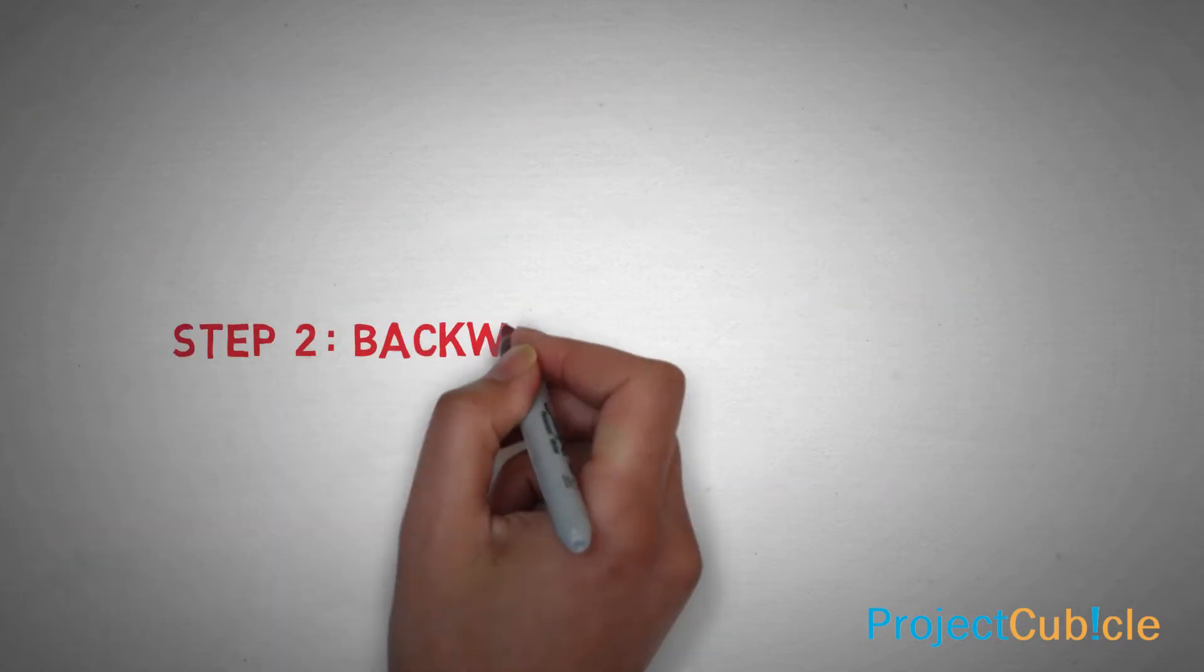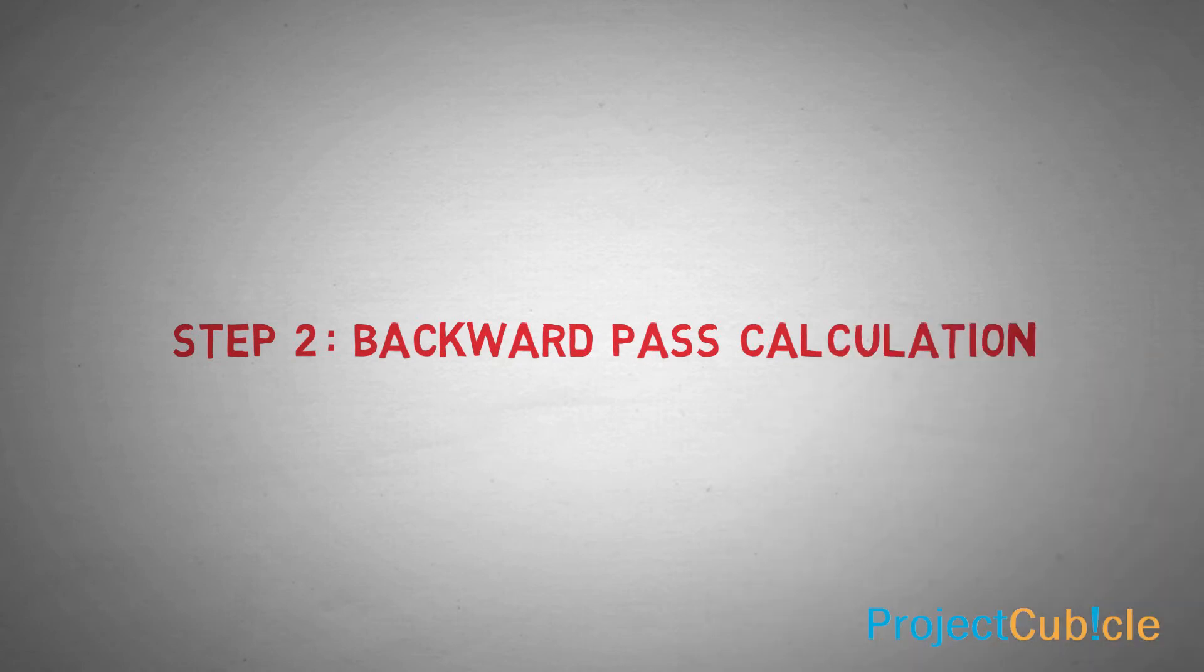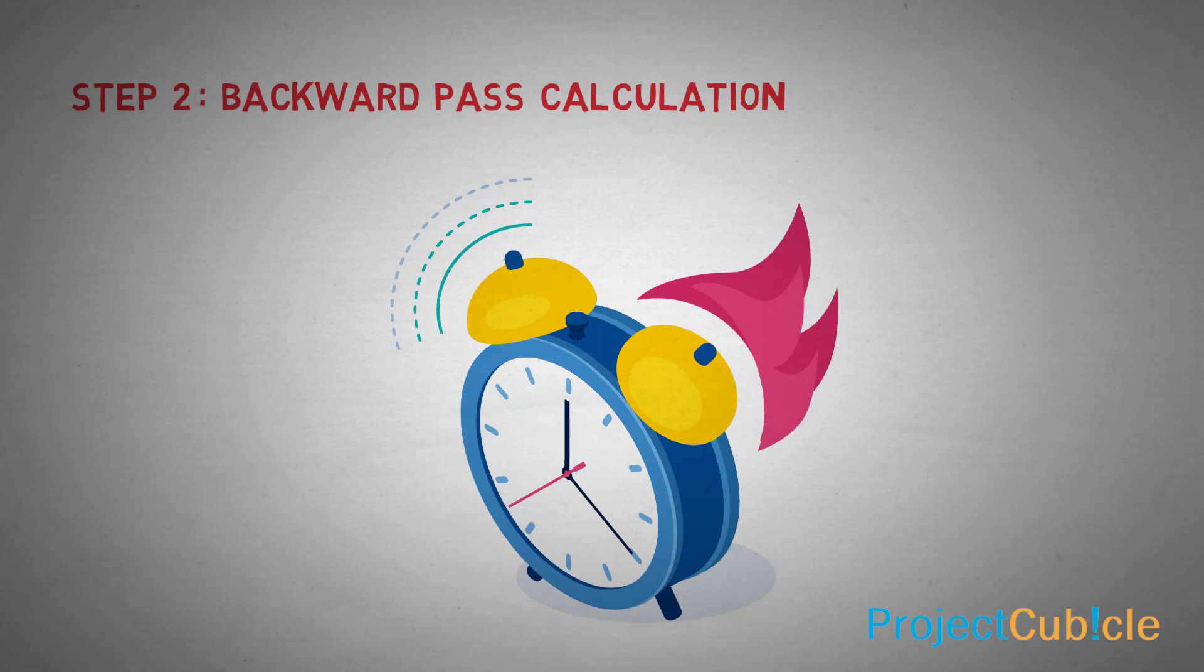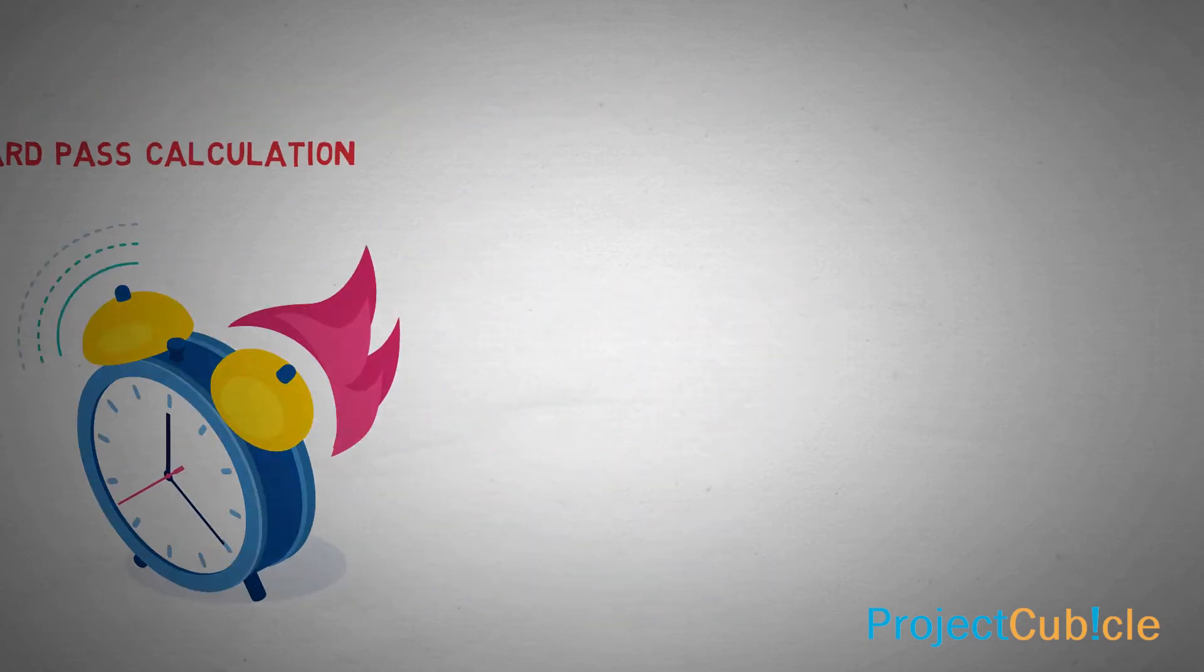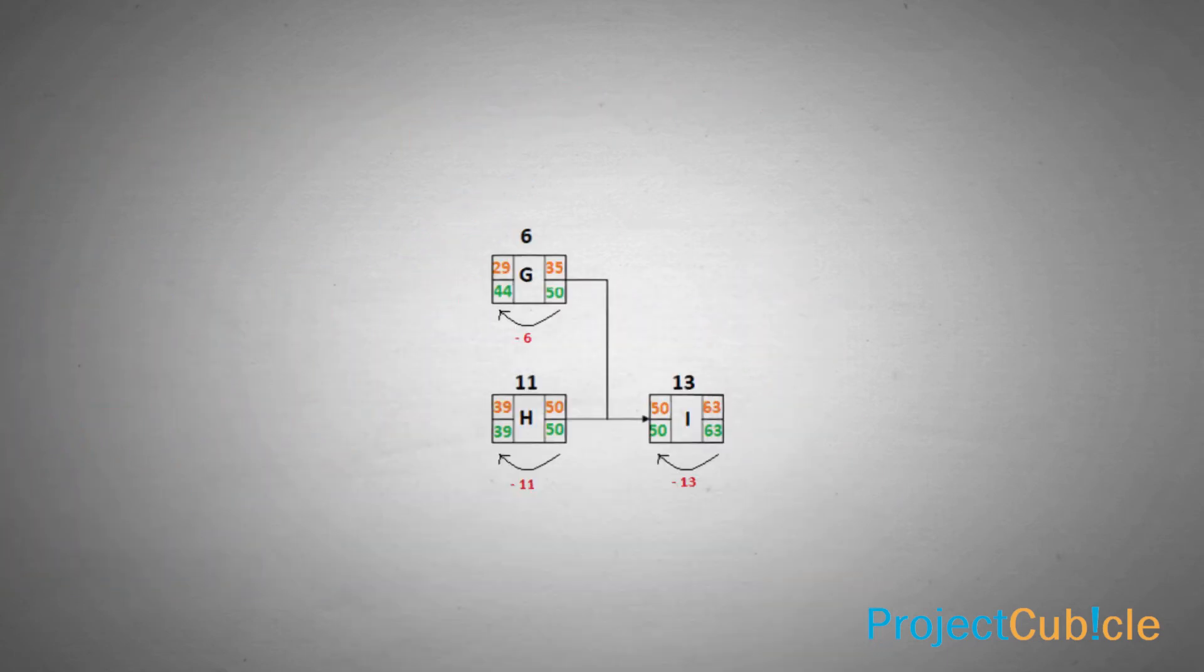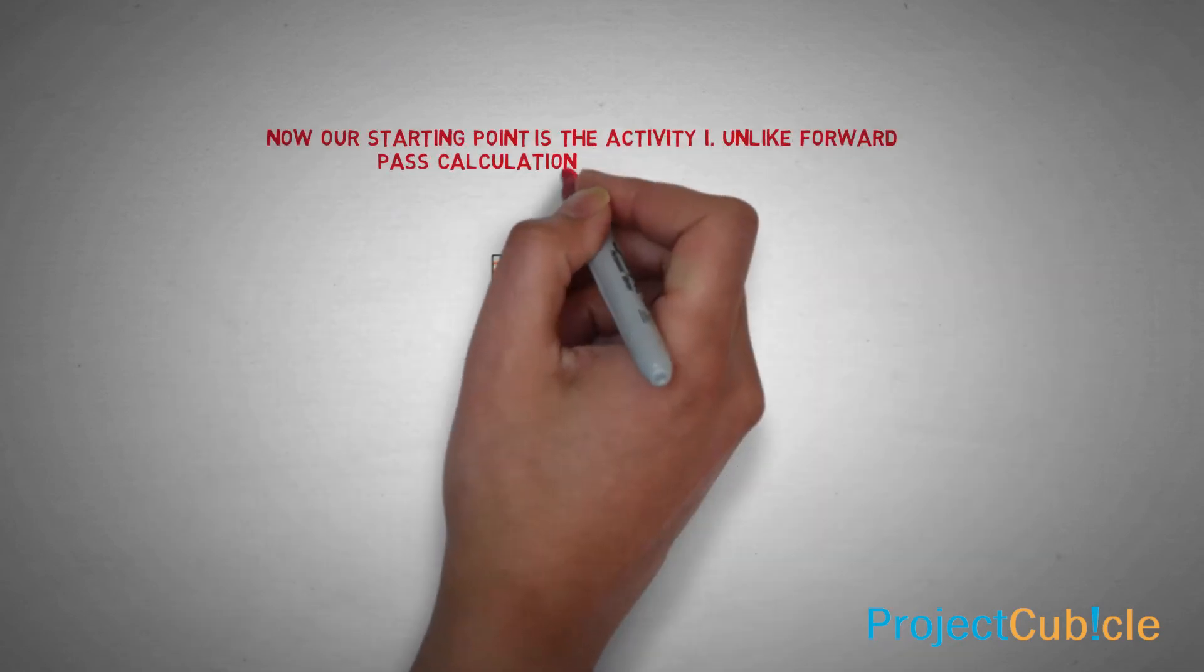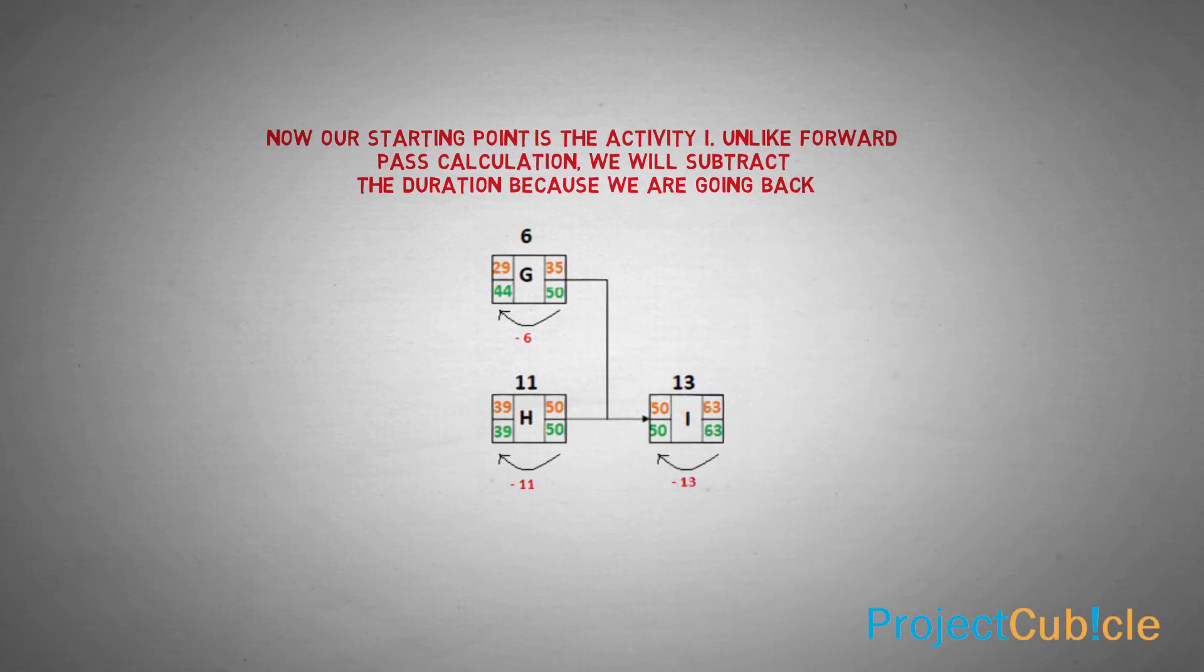Step 2. Backward pass calculation. Backward pass calculations determine the latest dates by which each activity can be performed without increasing the project's minimum duration. Now our starting point is the activity I unlike forward pass calculation. We will subtract the duration because we are going back. For the activity I,